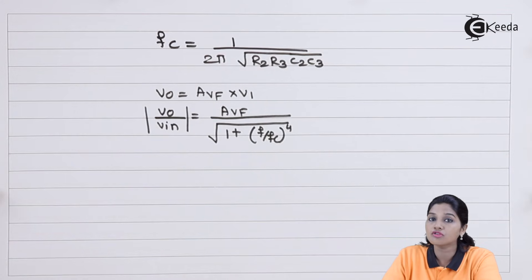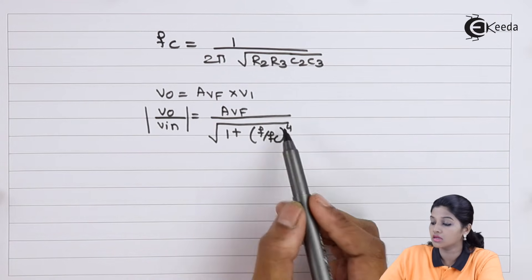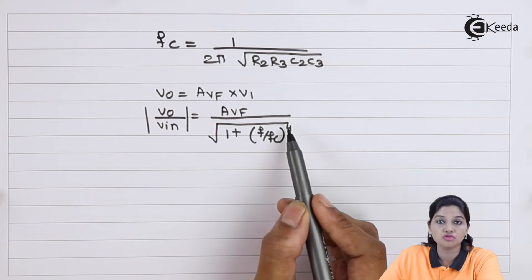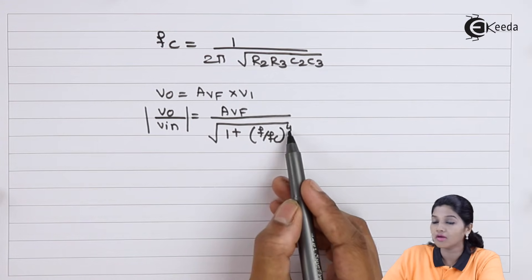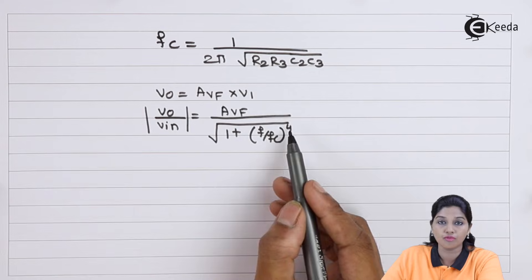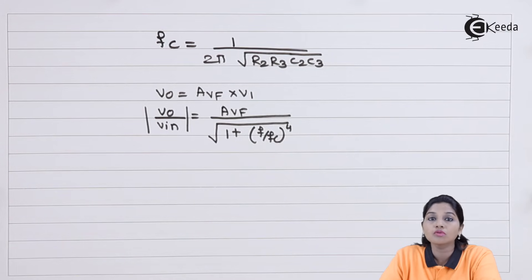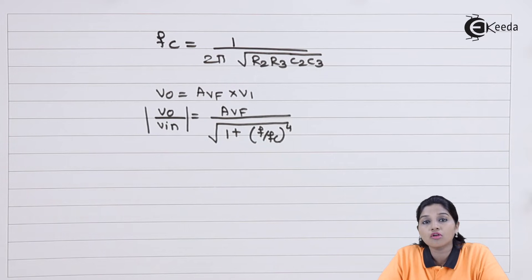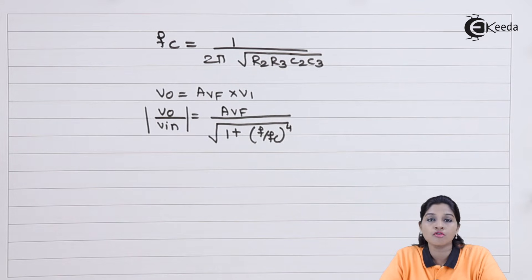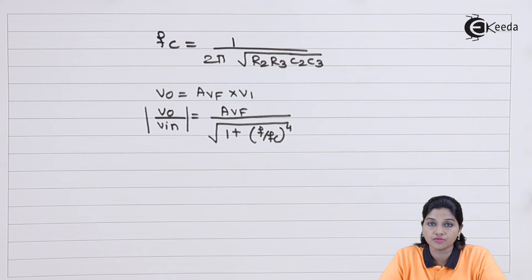In the first order Butterworth low pass filter, the power in the gain equation is 2. But as the order of the filter increases, the power value also increases to 4 for second order. The design of the second order Butterworth low pass filter is very important because all higher order filters can be designed using it.